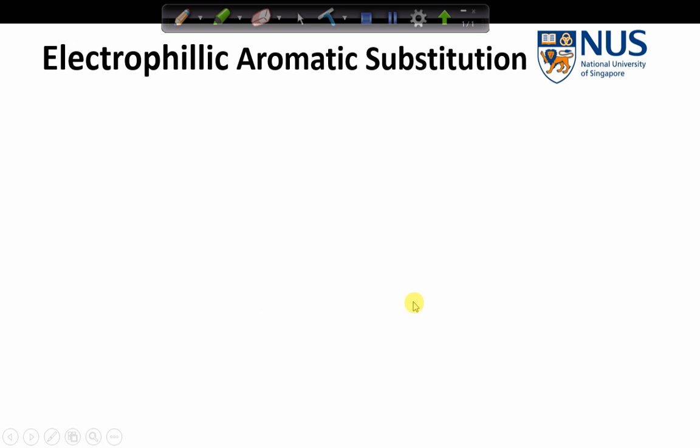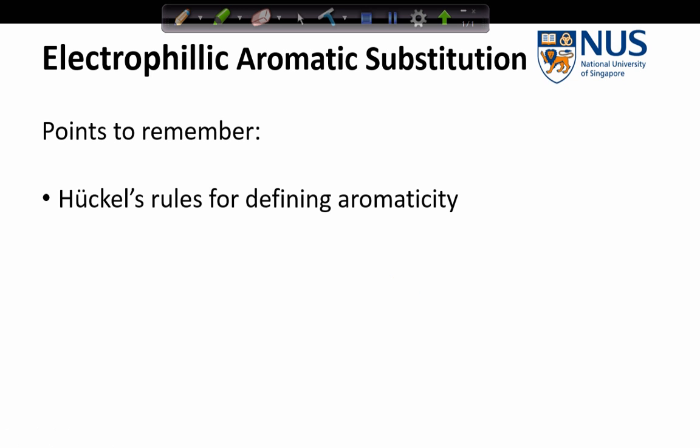So what is electrophilic aromatic substitution? Well firstly we need to understand what is meant by aromaticity, so for this we look to Hückel's rules. So his rules are: the molecule must be cyclic, it must be planar, it must be fully conjugated, and it must have 4n + 2 π electrons.